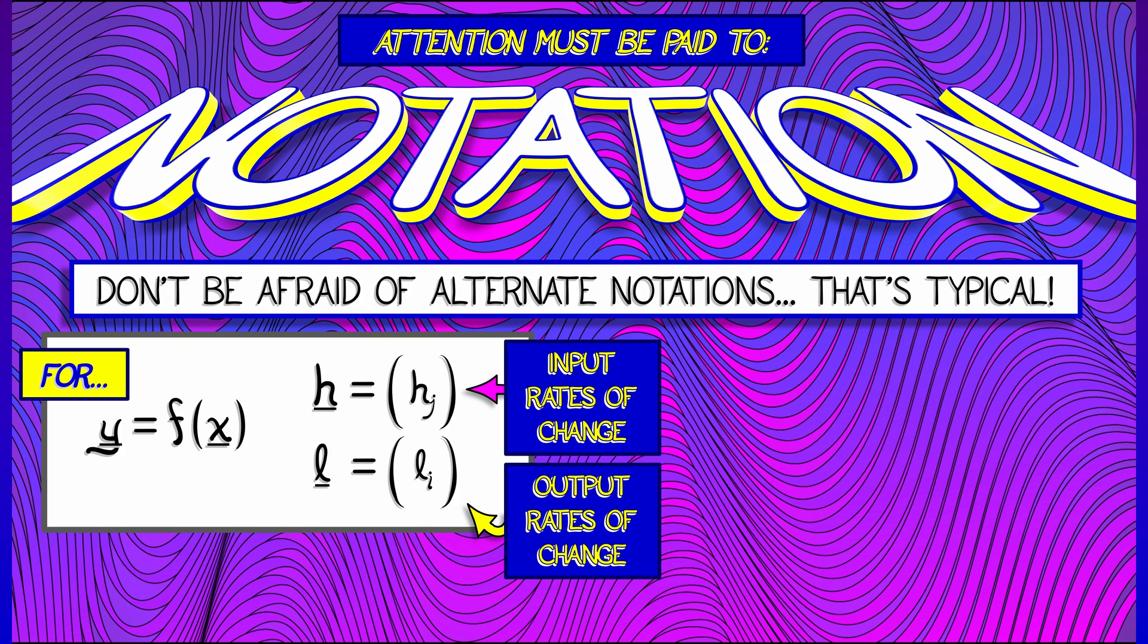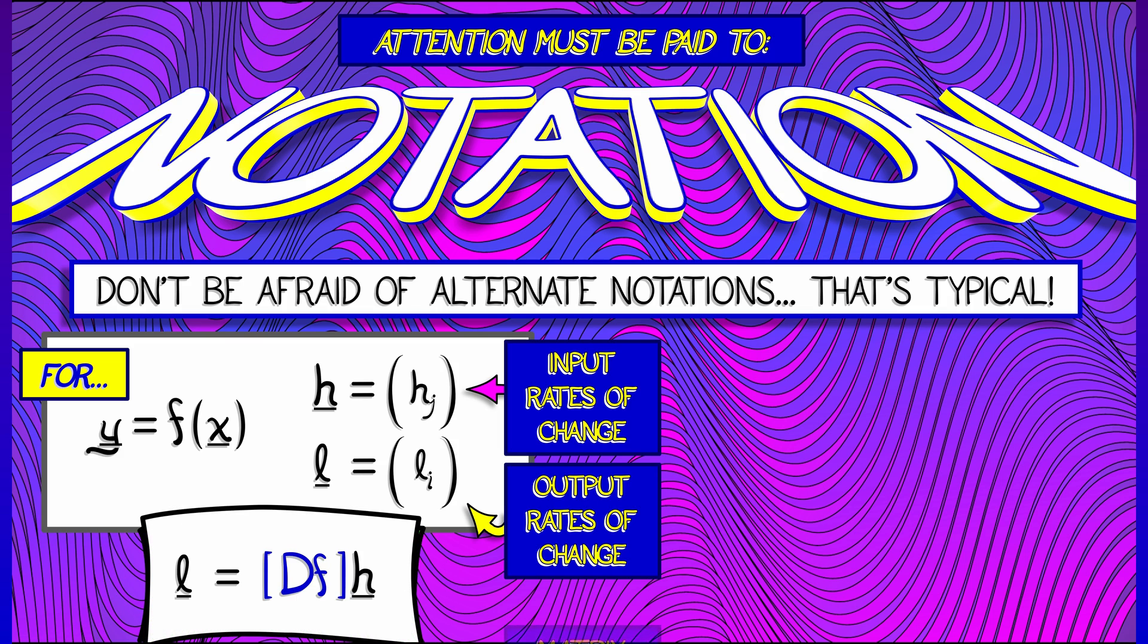Likewise, for the vector rates of change of the outputs, I might use l, I might call it something else, but I will use the matrix notation for the derivative. I will use df to denote that linear transformation that takes h, the vector of rates of change of inputs, to l, the vector of rates of change of the outputs.